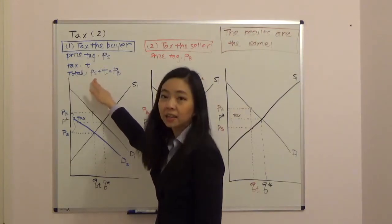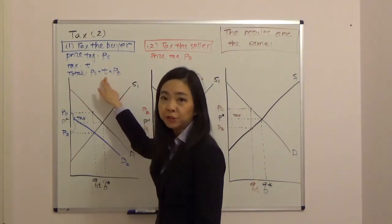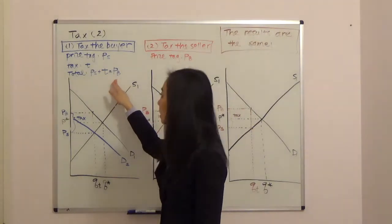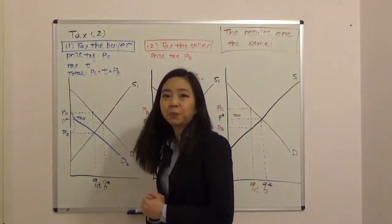So PS, that's on the price tag plus the tax you pay to the government. And eventually your credit card will be charged PB. So that's when we tax the buyer.